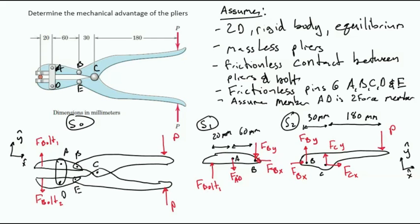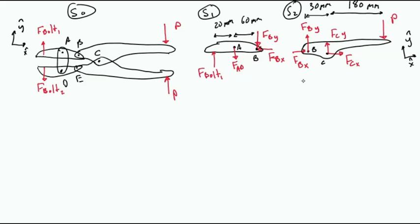In this system, we have 1, 2, 3, 4, 5, 6 unknowns. So we will not need any additional free body diagram. Normally, I would start by analyzing S2 since it has the only known force in it. However, let's start with S1.